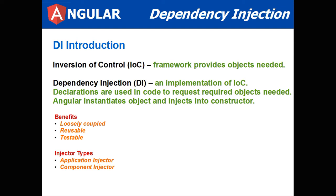What is dependency injection? In order to discuss it, let's talk about Inversion of Control, IOC. It's a framework which provides objects as needed, and dependency injection is one particular implementation of IOC. Declarations are used in code to request required objects. Angular instantiates objects and injects them into constructors. The benefits are loosely coupled components and services, and reusable objects that are testable outside the components.